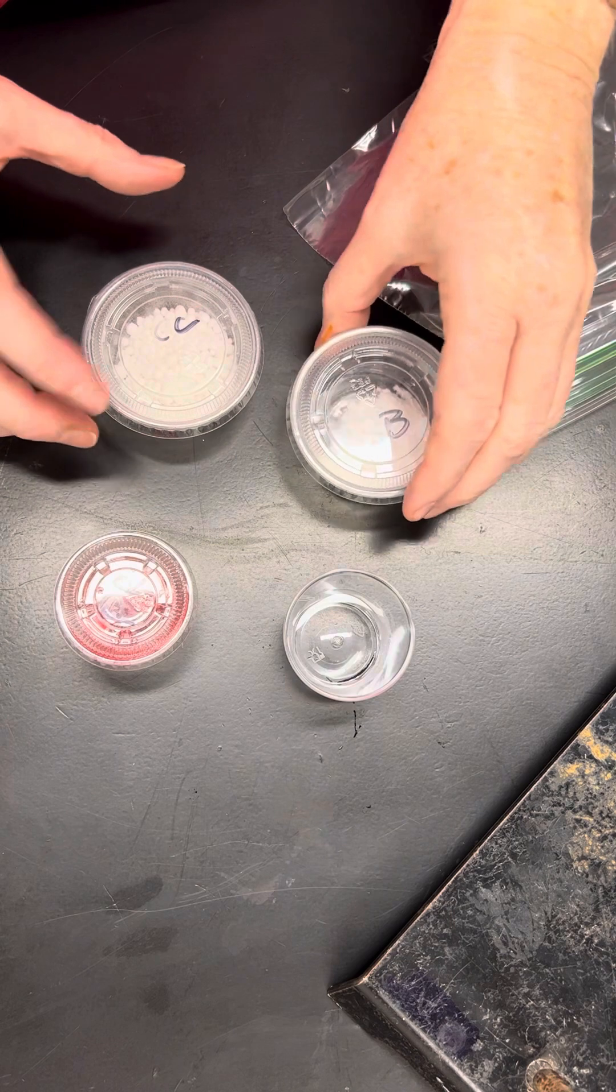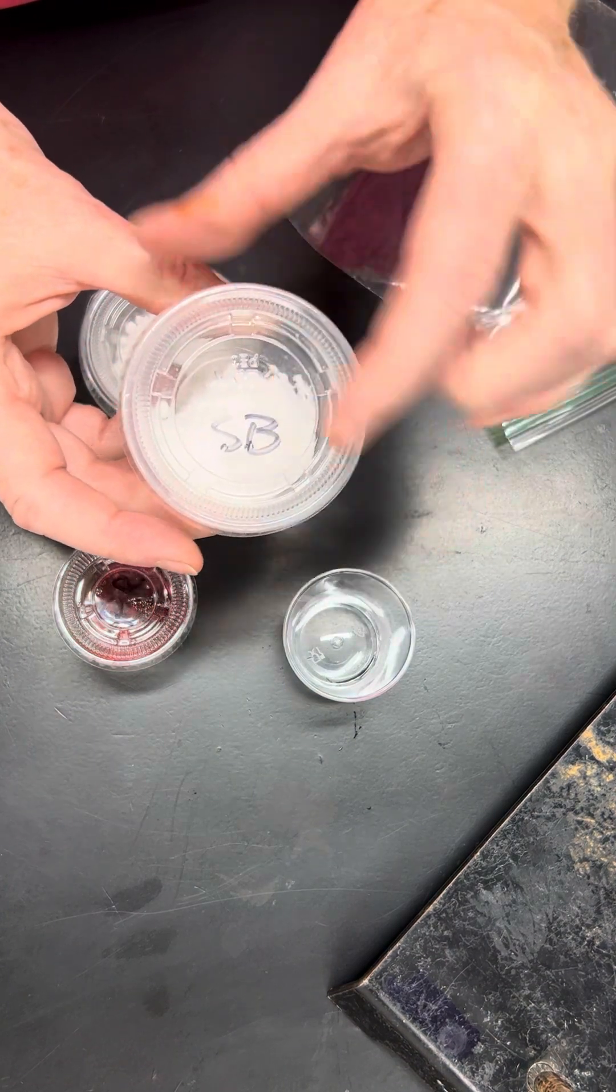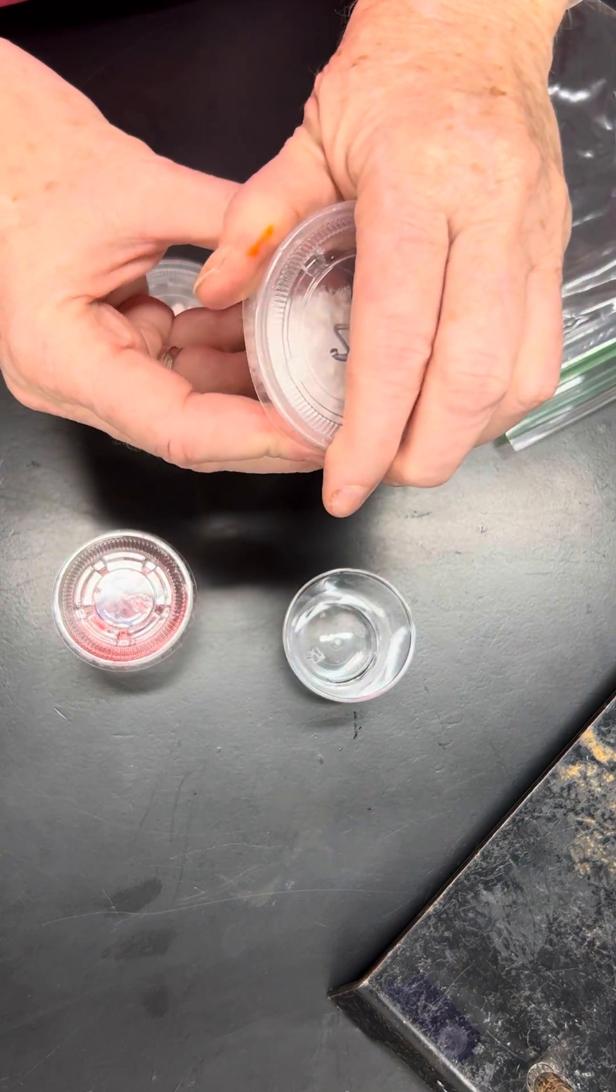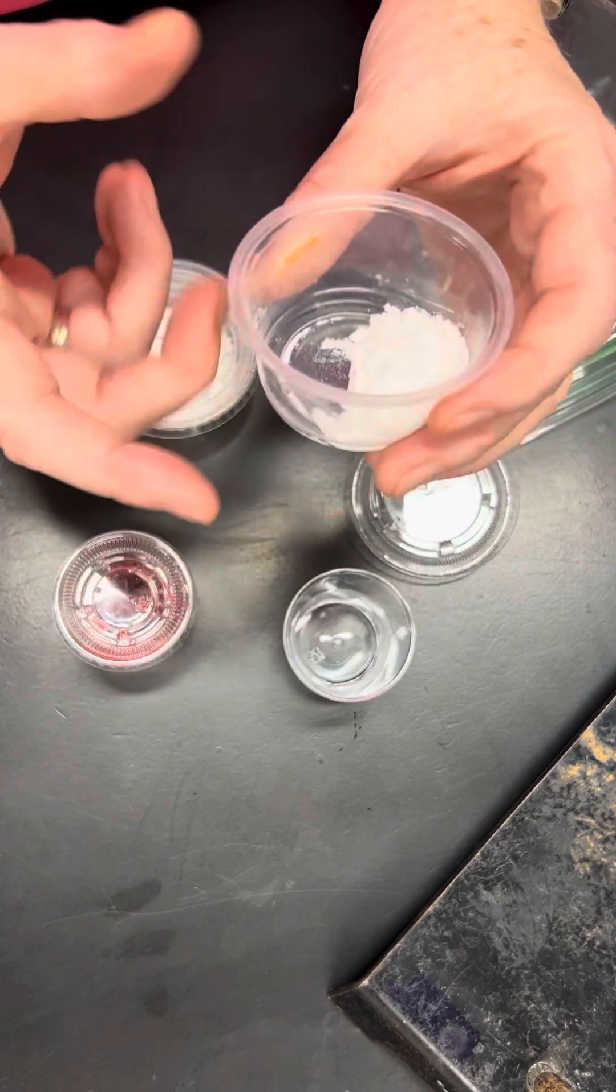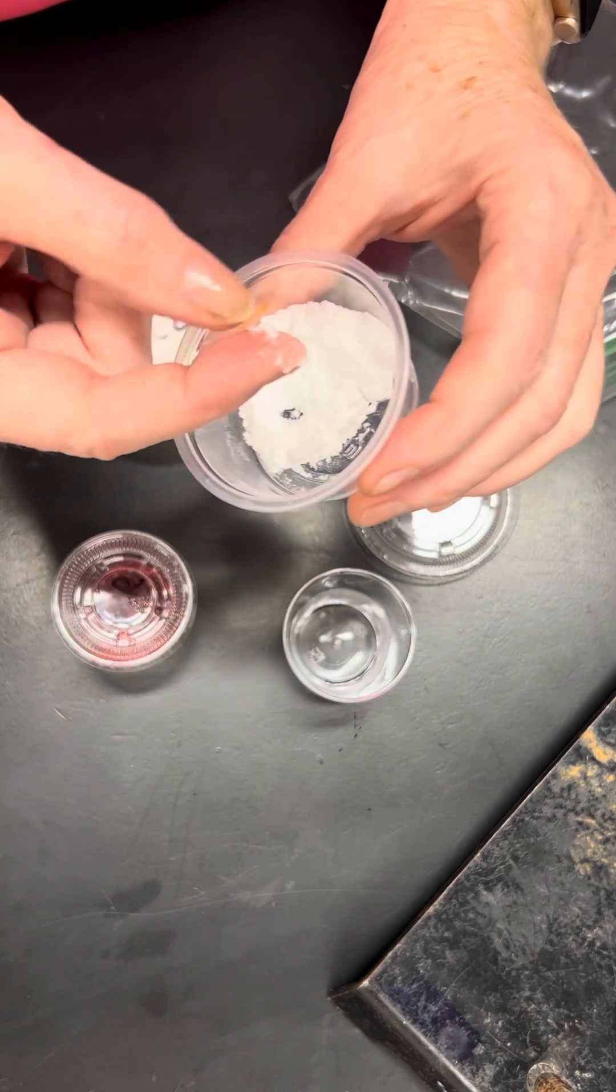The first substance we're using is identified as SB for sodium bicarbonate. Sodium bicarbonate is a white solid. It's powdery.